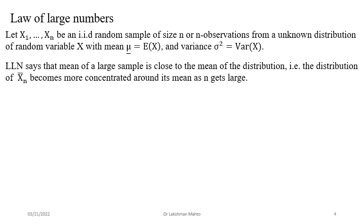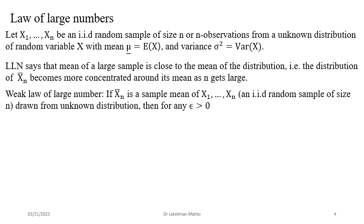The Law of Large Numbers states that the mean of a large sample is close to the mean of the distribution. When n is large, the distribution of the sample mean becomes more concentrated around its true mean. As n goes to infinity, the sample mean focuses tightly around the true mean — that is the perspective of the Law of Large Numbers.